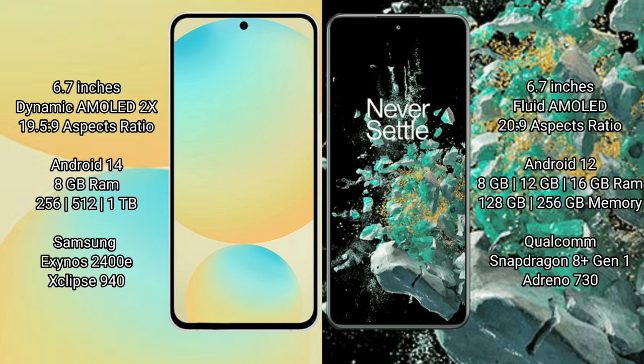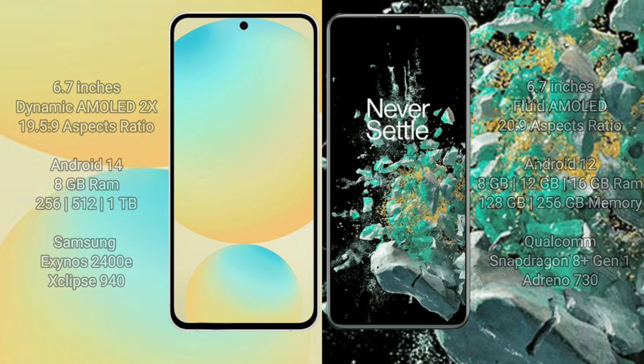Samsung Galaxy S24 FE is powered by the Exynos 2400E processor with an Adreno 940 GPU. OnePlus 20 comes with 8GB, 12GB, and 16GB RAM options with 256GB internal storage, powered by the Qualcomm Snapdragon 8 Gen processor with an Adreno 730 GPU.